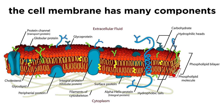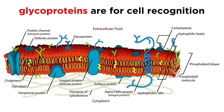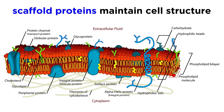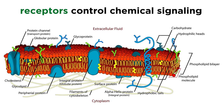Beyond transport proteins, there are many other types of proteins in the cell membrane. There are glycoproteins with oligosaccharide chains jutting out that help cells recognize one another. There are scaffold proteins that bind with structures inside or outside of the cell to maintain cell shape and location. And lastly, there are receptor proteins that receive signals from outside of the cell. Let's learn about those next.